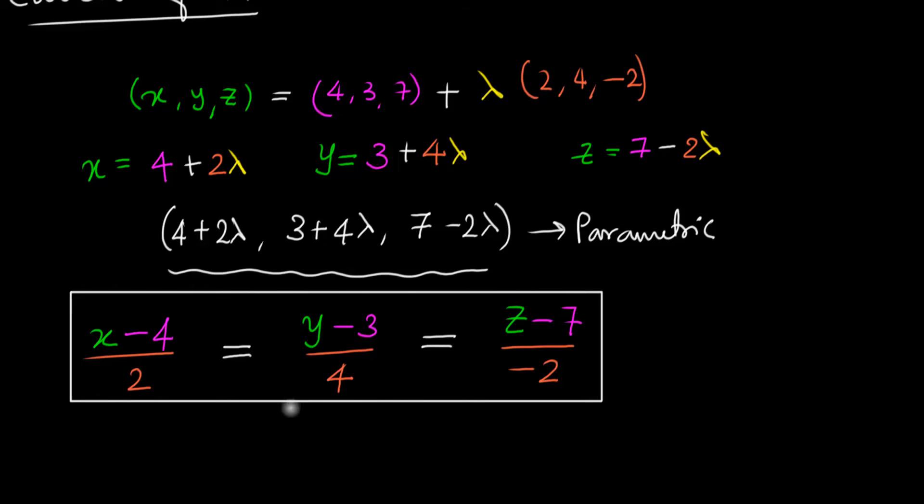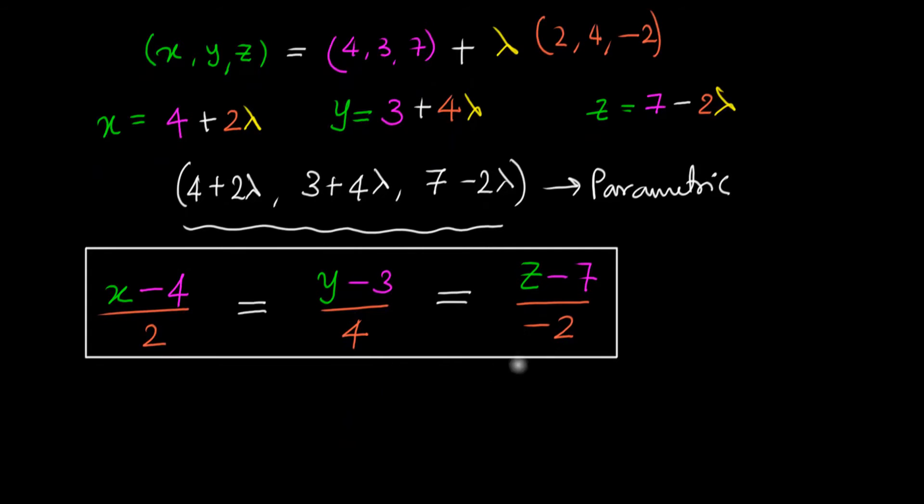So again, try and think about what this equation is saying. So this equation is of the form. In general, we can say the equation is of the form: x minus x-coordinate, so x-coordinate of the point, divided by the direction ratio, divided by the x-direction, what do you call that?